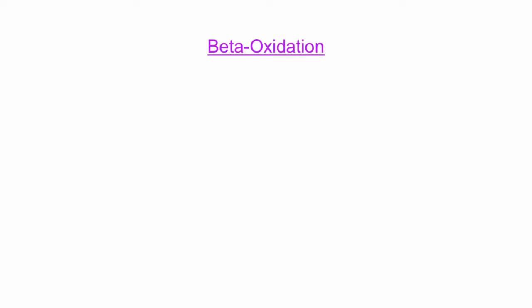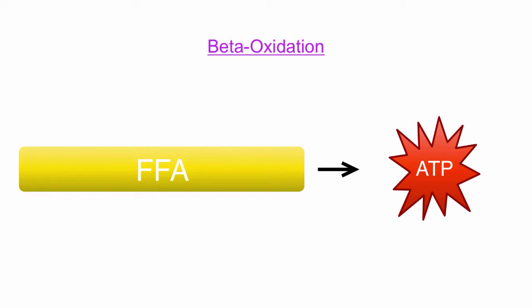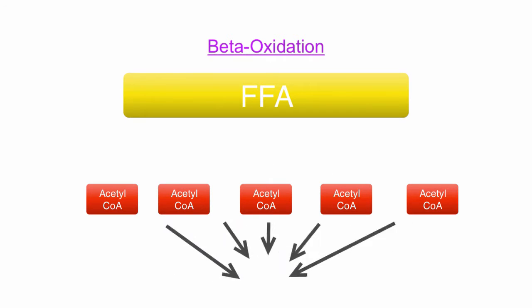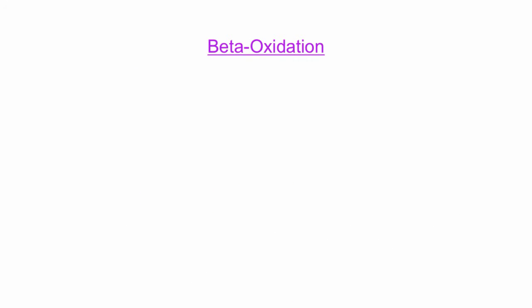In this video, we are going to cover beta oxidation. This is the process of taking a free fatty acid and preparing it to be used for energy. The ultimate goal is to turn free fatty acids into multiple acetyl-CoA molecules that will be used in the Krebs cycle. However, other important products include NADH, H+, and FADH2.